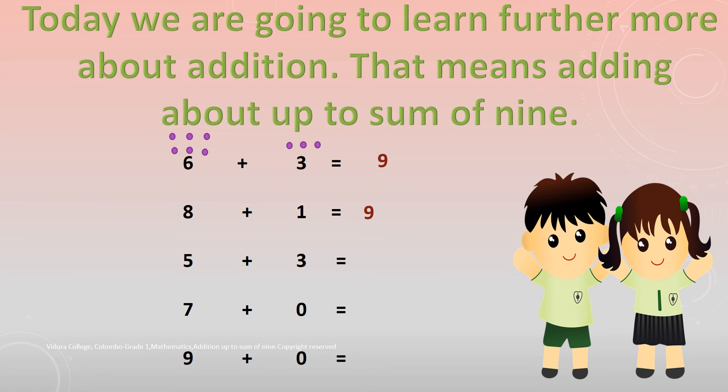Next one. 5 plus 3. How do you get the answer? You have to draw 5 dots above number 5 and 3 dots above number 3. Now count all the dots together. You will get number 8.